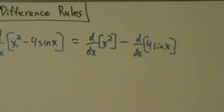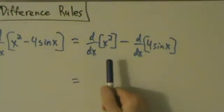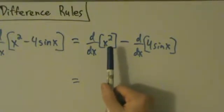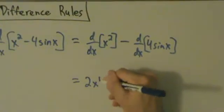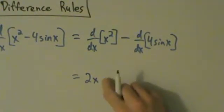So what happens next? d/dx of x² - that's just the power rule with a positive integer power. We know that's going to be 2 times x to the first, or just 2x.